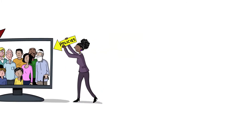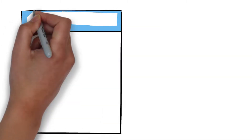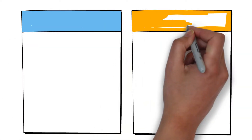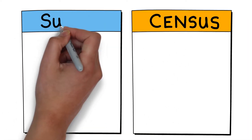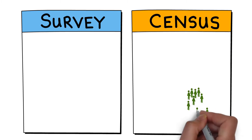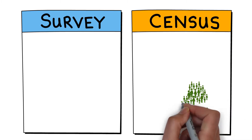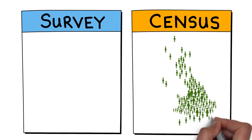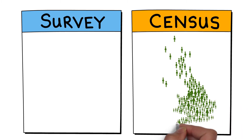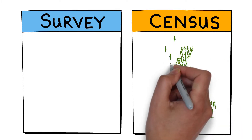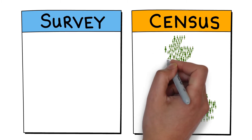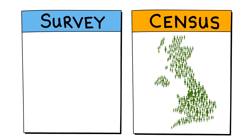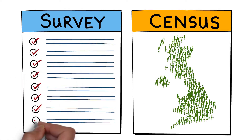To build a synthetic population we use information collected about individuals from a range of sources, like the census and surveys. The population census is useful because it tells us about everyone in a given geographical area, but the data is only available in aggregated form and so does not tell us anything about individual people.